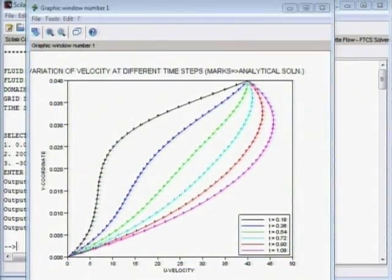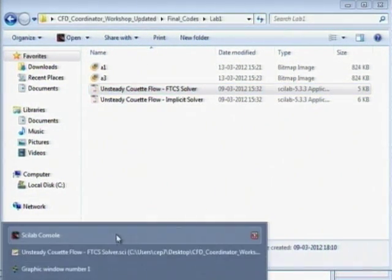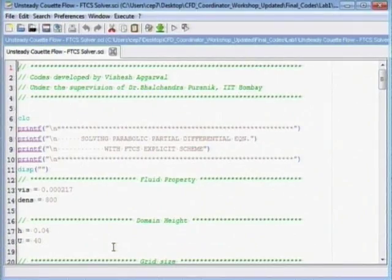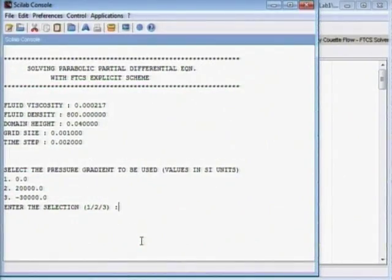Let us run one more of that adverse pressure gradient. You go back to source code, press execute, go to the Scilab console and enter 2.